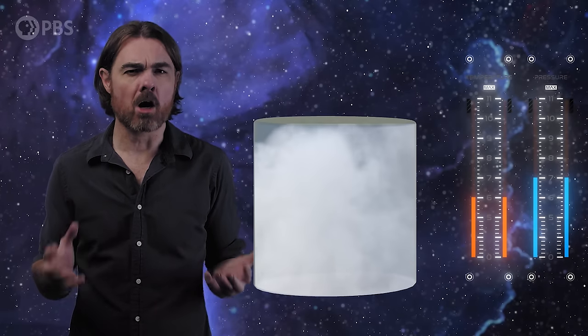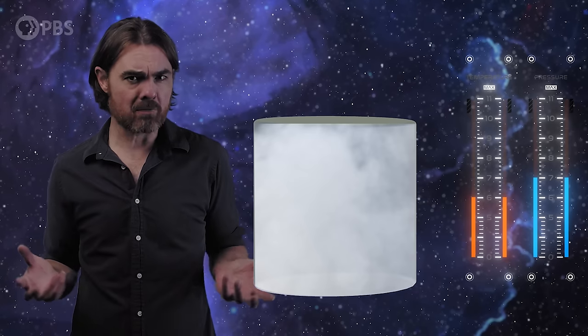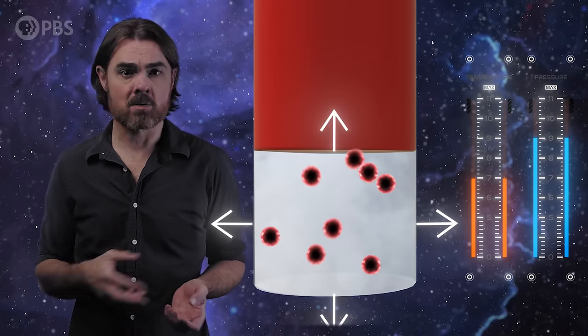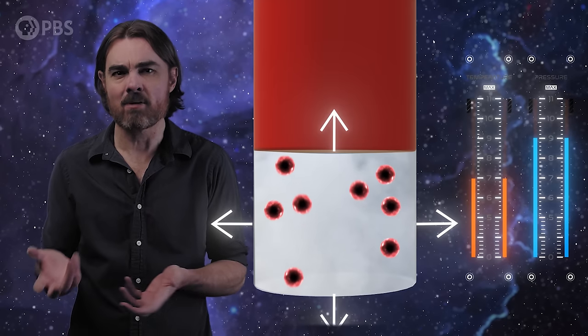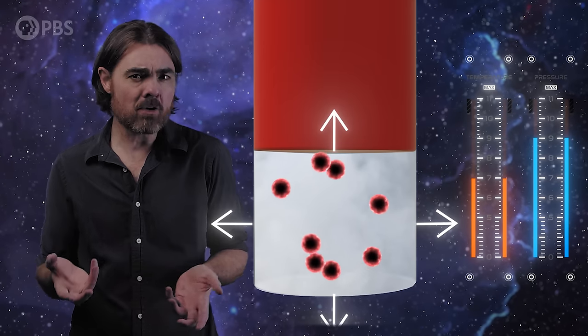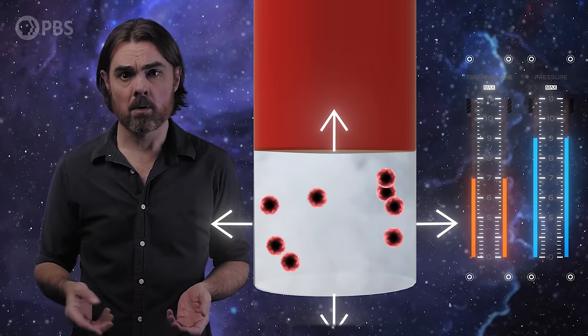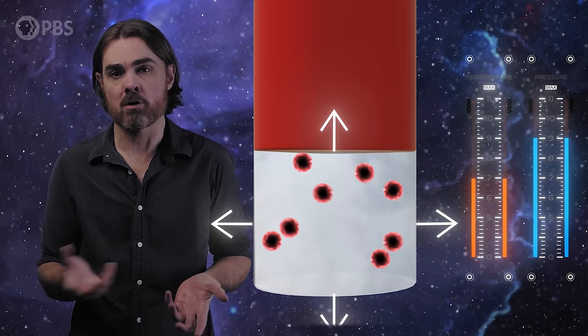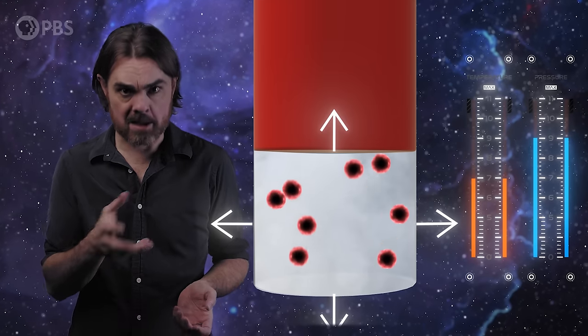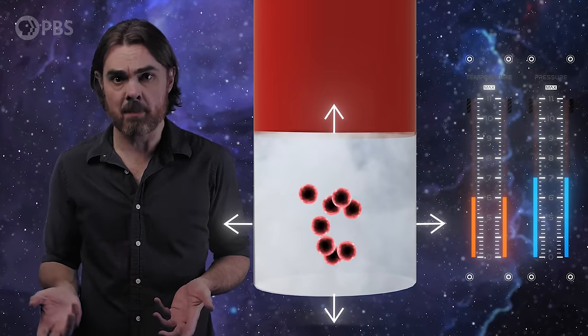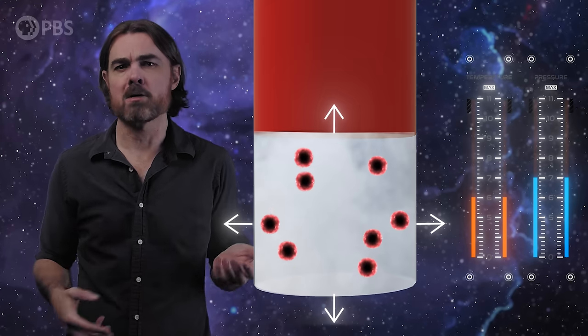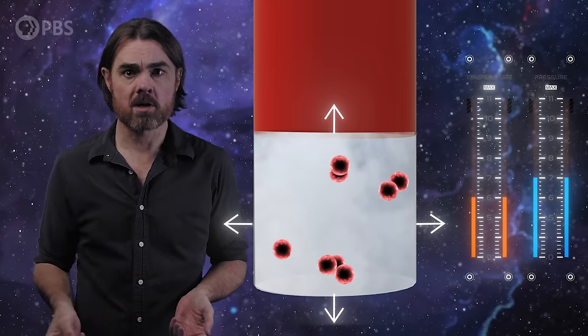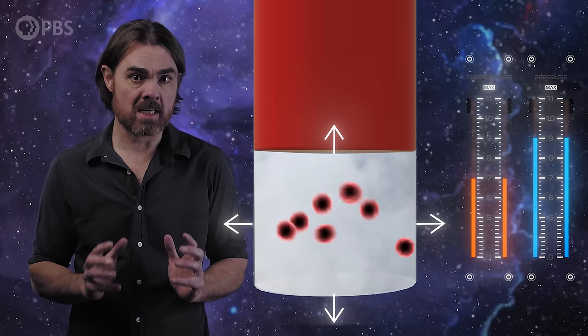Gases, on the other hand, always expand to occupy the entirety of their container and are also relatively easy to compress by exerting pressure. Gas particles zip around without significantly interacting with each other. They keep moving until they hit a container wall. Those impacts exert a pressure on the container. Expand the container and the gas will expand, but it'll take longer for each particle to travel between the walls so pressure drops, vice versa if you shrink the container.